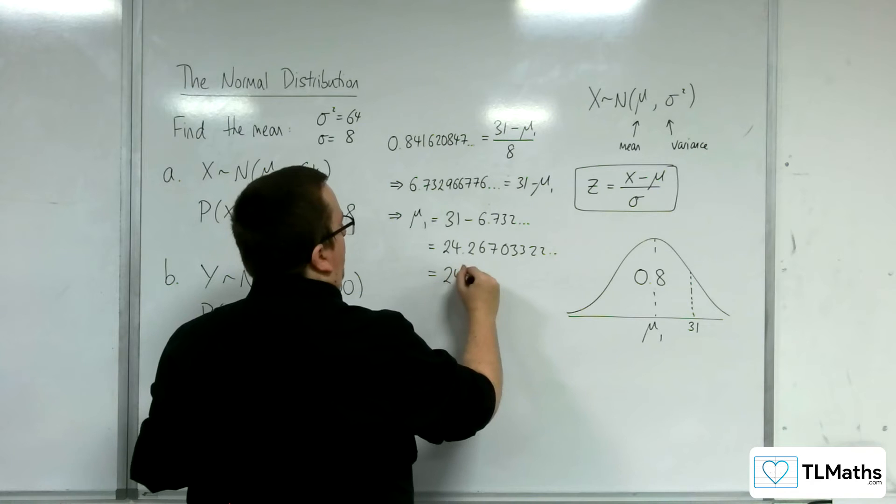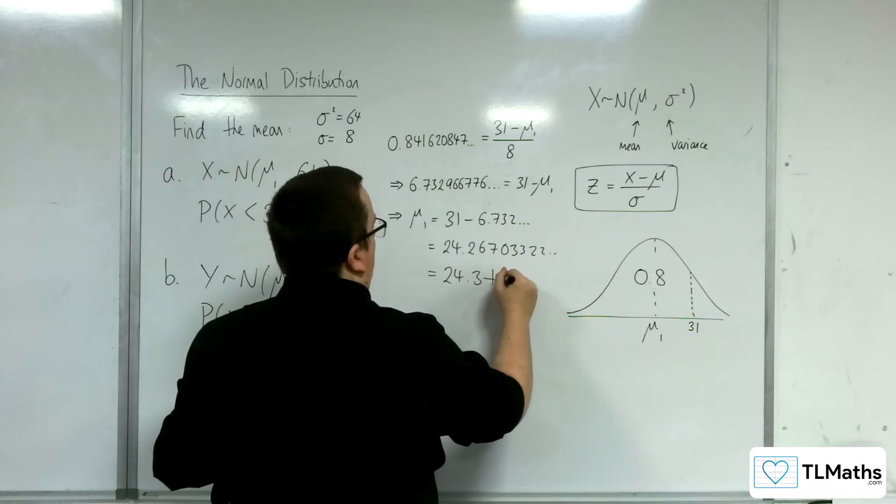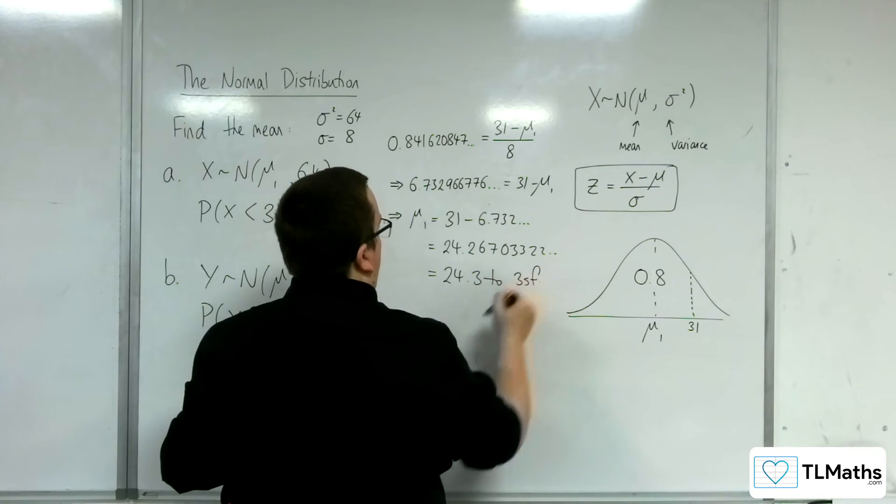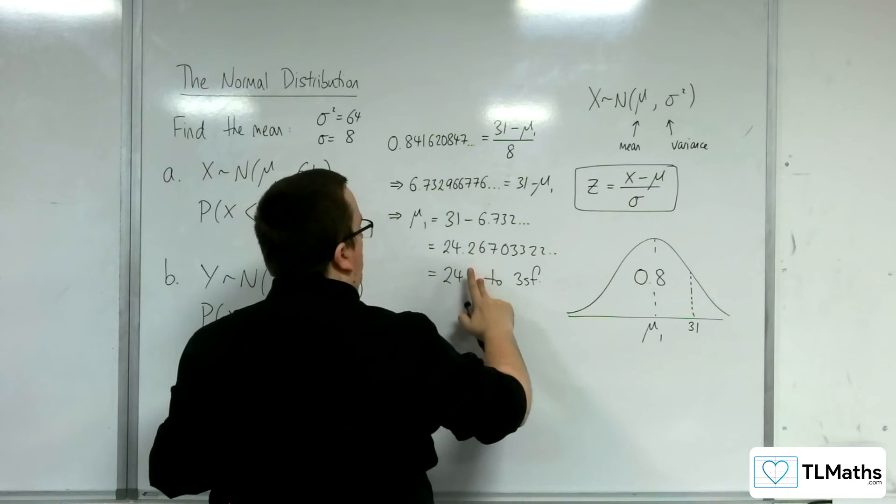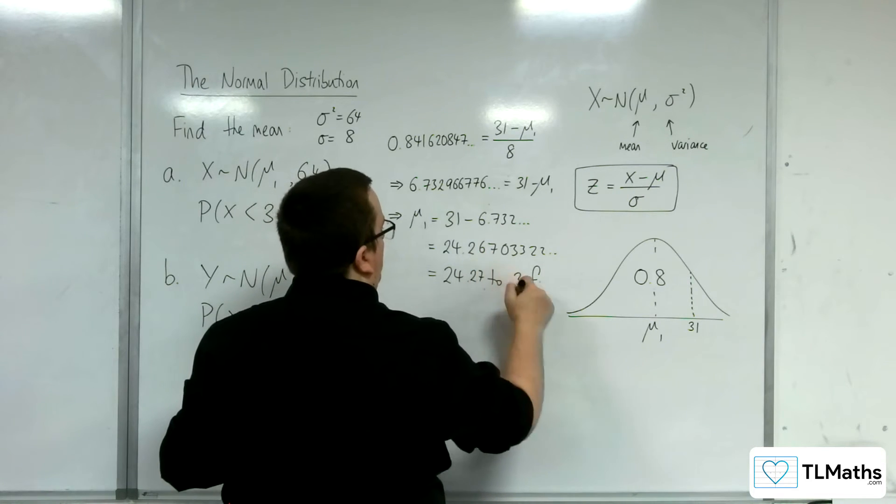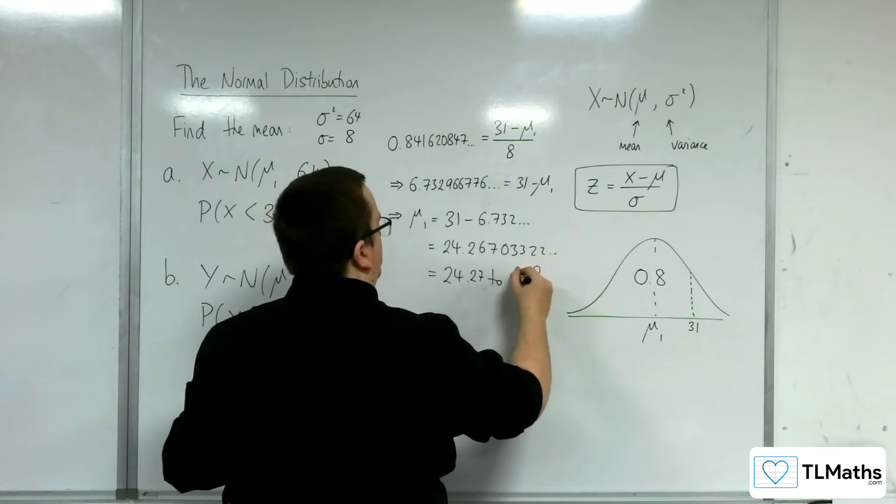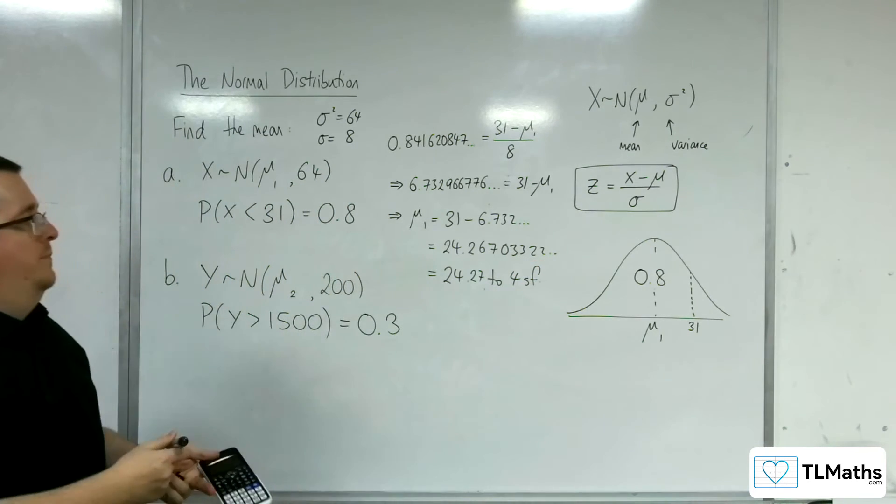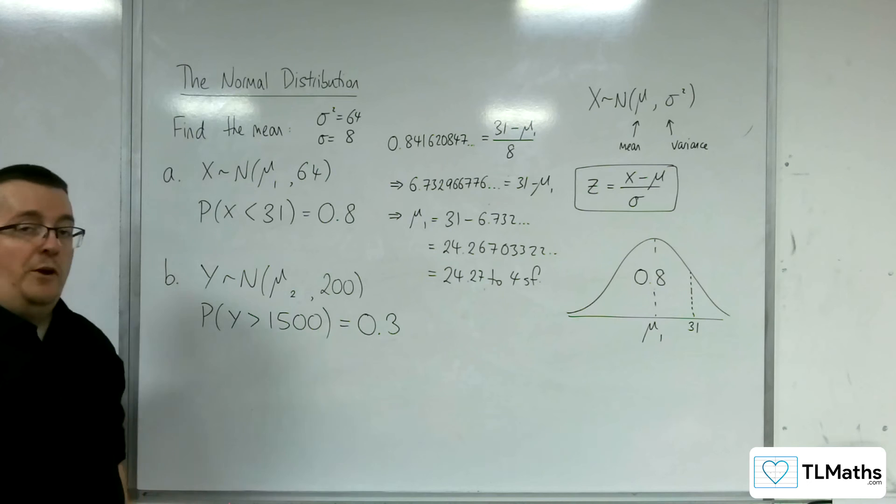So 31 take away my calculator display, I get 24.26703322. So the mean is 24.3 to 3 significant figures. If we go to a little bit more accuracy there, 24.27 to 4. That's how we can work out the mean.